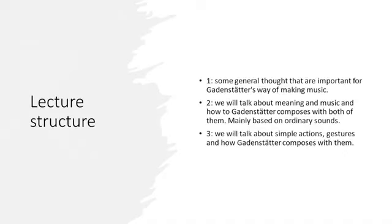We now move on to the second part of the lecture. I want to start with a series of works dealing with daily sounds and their meaning, and how Garnstetter works on those meanings. The pieces are called Semantical Investigations 1 and Semantical Investigations 2. They are good examples to get a first idea of how Garnstetter approaches meaning and how he introduces, organizes, and transforms them to further develop them into an ensemble piece. We will focus on Semantical Investigations 2.